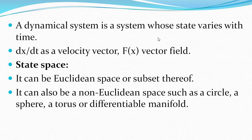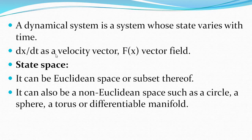A dynamical system is a system whose state varies with time. When the state vector changes with time, dx/dt is called the velocity vector, and f(x) is called the vector field. These notations are used to represent the velocity vector dx/dt and the vector field f(x).